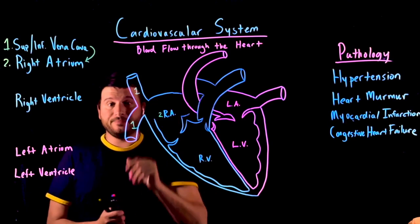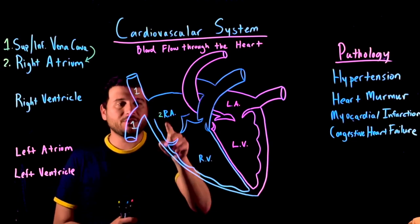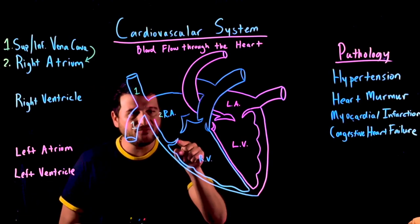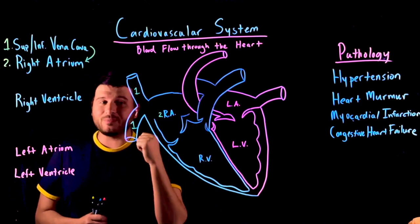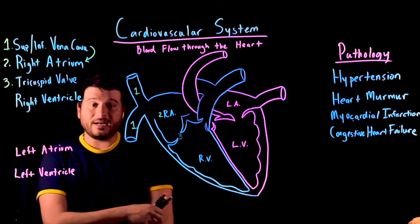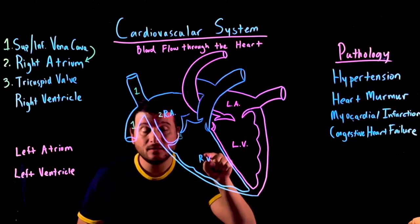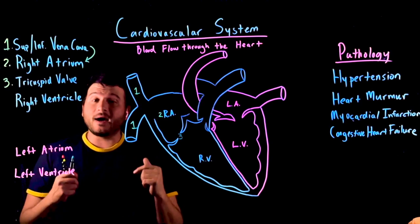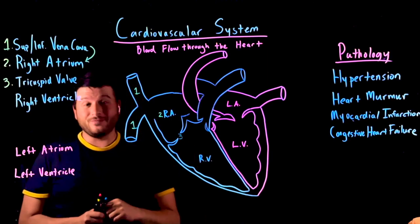Now this right atrium contracts, and where is it going to push that blood? It's going to push that blood into the right ventricle. It has to pass this valve right here, and this valve is known as the tricuspid valve. We pass through this tricuspid valve, which is a one-way valve. It opens up to allow blood to go down, but blood would not be able to go the other way, which is why it's a valve.